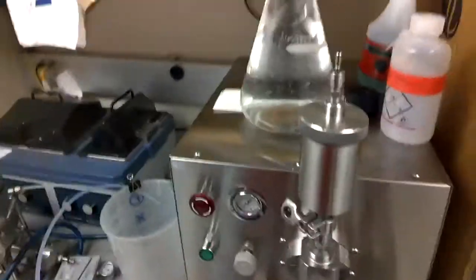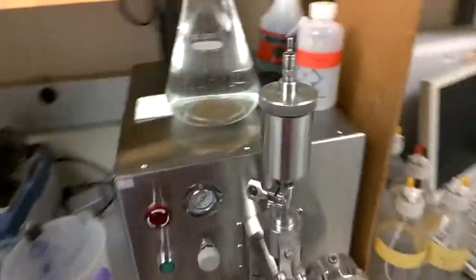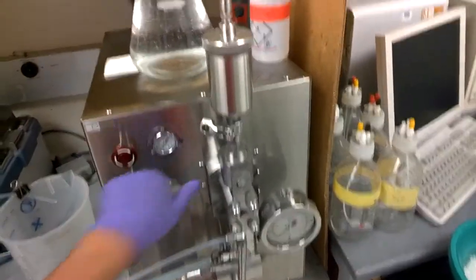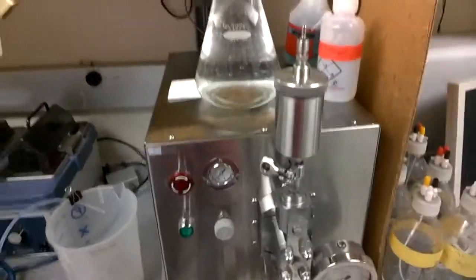So next thing to do is to turn the Emulsiflex on. So there's two controls, there's an electrical pump control, and there's air pressure control over here. And so first we need to actually turn on the electrical power to the Emulsiflex, and it's here in the back.